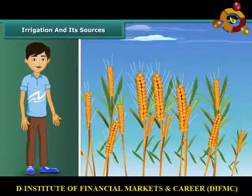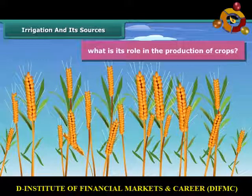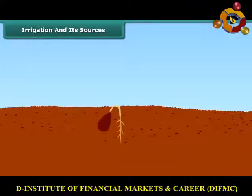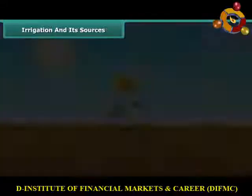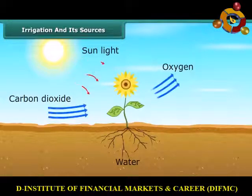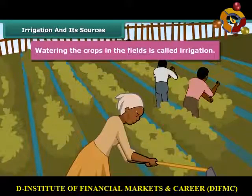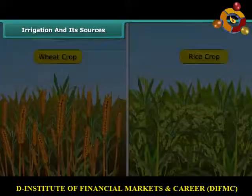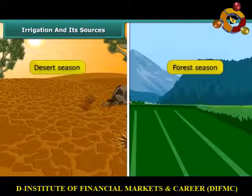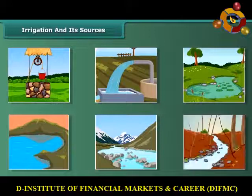Water is very essential for all living beings, and it plays a key role in crop production. Water is essential because germination of seeds cannot take place under dry conditions. Water is absorbed by the plant roots, and along with it, minerals and fertilizers are also absorbed. Watering the crops in the fields is called irrigation. The time and frequency of irrigation varies from soil to soil, crop to crop and season to season. Wells, tube wells, ponds, lakes, rivers, dams and canals are some of the main sources of water for irrigation.